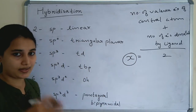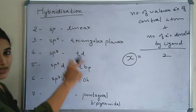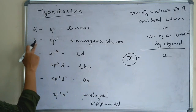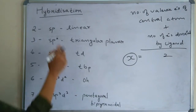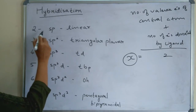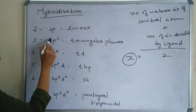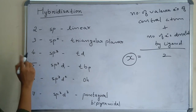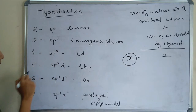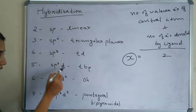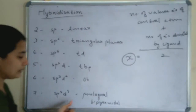Let's call it x. If x is equal to 2, then the hybridization will be sp. If x is equal to 3, then hybridization is sp2. For x = 4, it is sp3. For 5, it is sp3d. For 6, it is sp3d2. For 7, sp3d3.